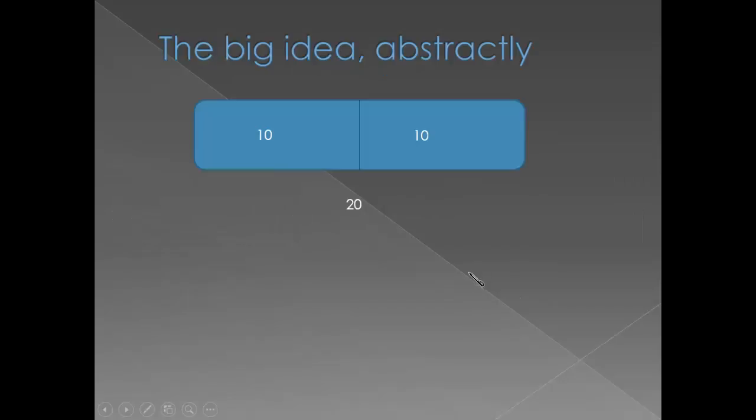Here's the big idea abstractly. Almost everything we do with amounts and numbers involves a whole thing that's made up of some parts. We add or multiply the parts to find out what the whole thing is. We're going to subtract or divide if we know what the whole is and we need to find the part.